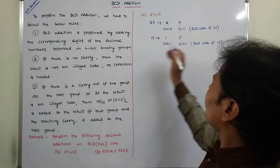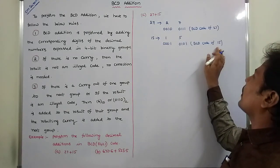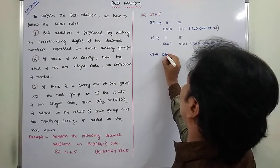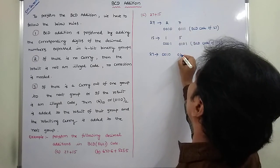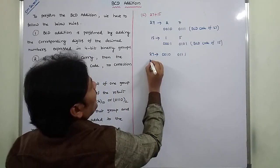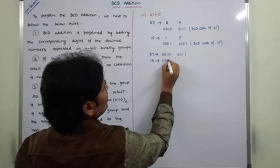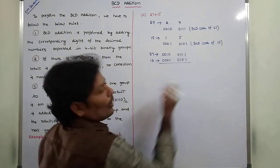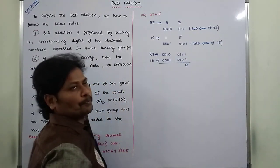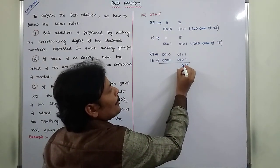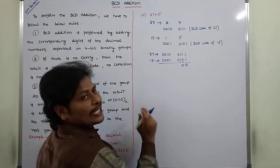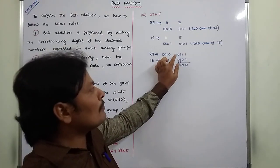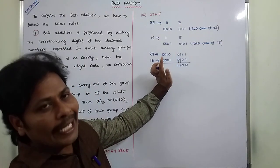After getting the BCD code of 27 and the BCD code of 15, we add the corresponding bits. 27 is represented by 0010 0111 and 15 by 0001 0101. Performing the addition: 1+1 = 0 carry 1; 1+0+1 = 0 carry 1; 1+1+1 = 1 carry 1; 0+0+1 = 1. From this 4-bit group, we are not getting any carry-out bit.